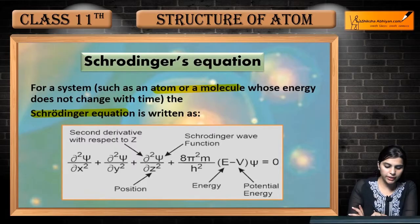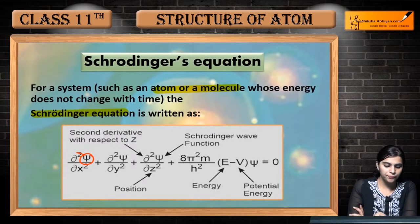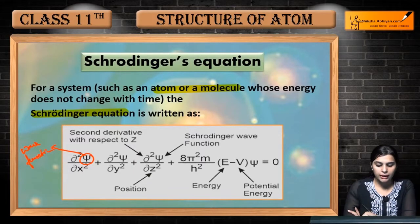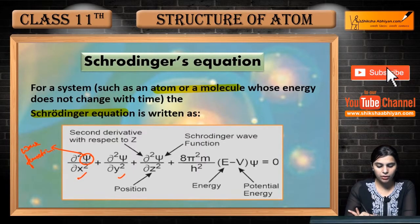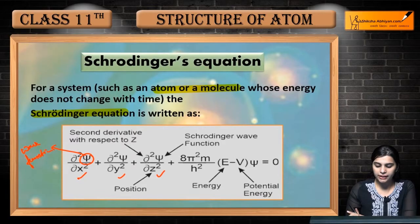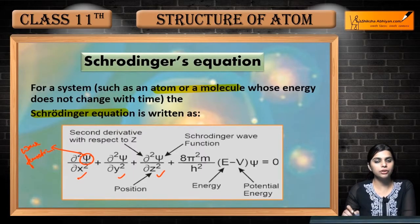The Schrödinger wave equation is represented as: del squared psi divided by del x squared — this is your wave function — plus del squared psi by del y squared, plus del squared psi by del z squared, which means three dimensions: x, y, and z. Plus 8 pi squared m by h squared, multiplied by (E minus V) times psi, equals zero. Here E is total energy, V is potential energy, and psi is the wave function.